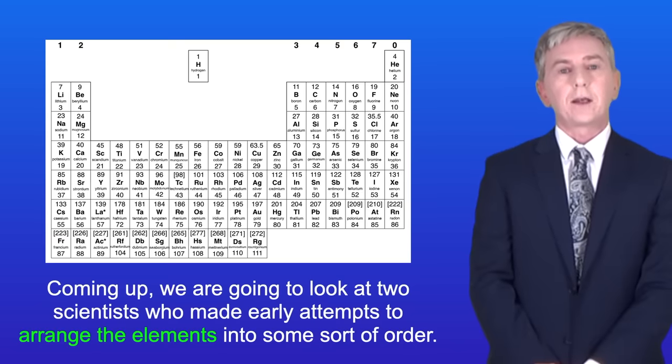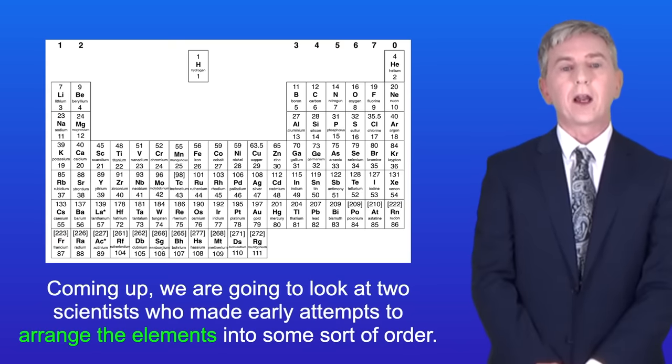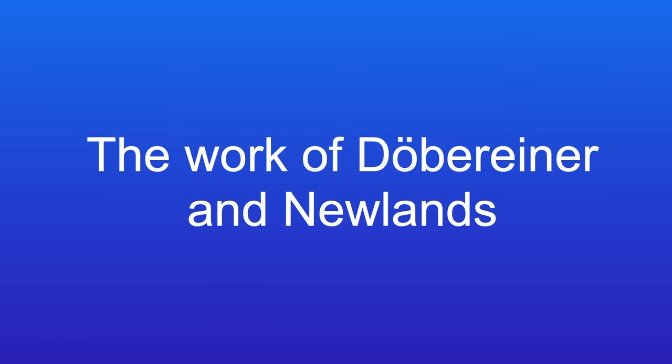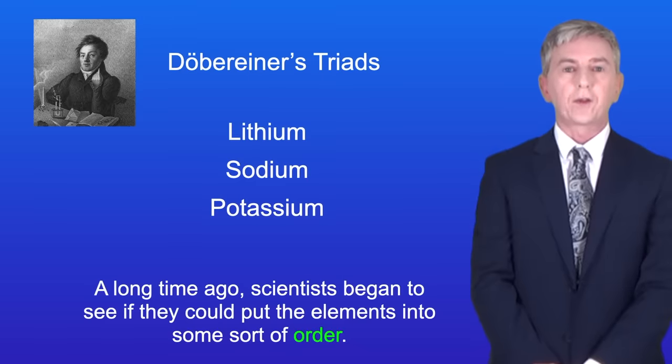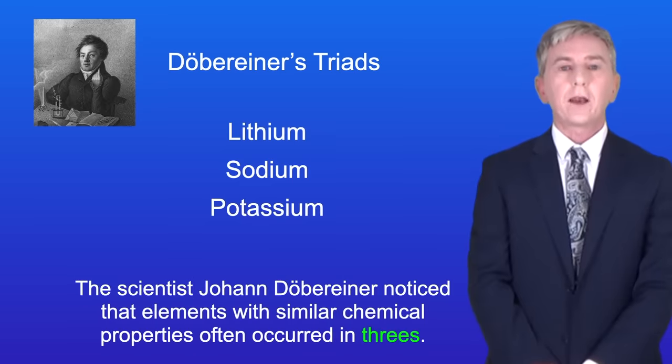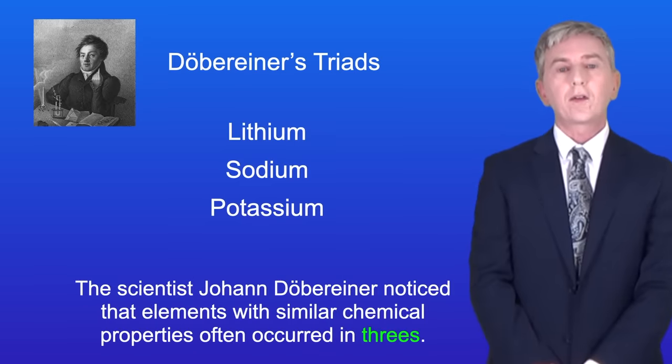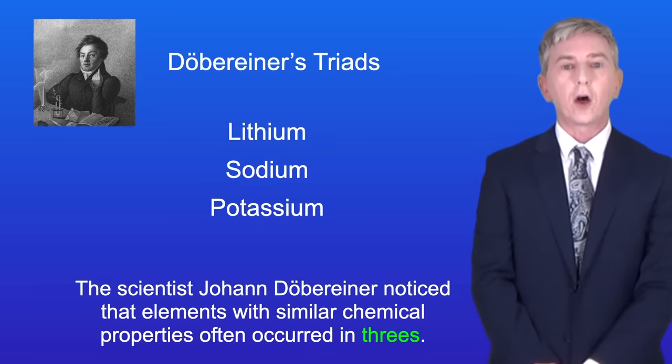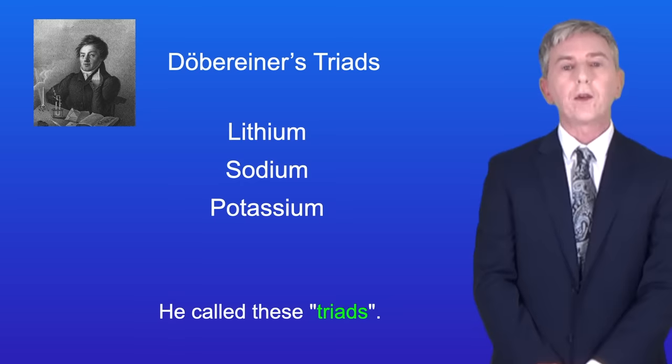Coming up, we're going to look at two scientists who made early attempts to arrange the elements into some sort of order. A long time ago scientists began to see if they could put the elements into some sort of order. The scientist Johan Döbereiner noticed that elements with similar chemical properties often occurred in threes, and he called these triads.